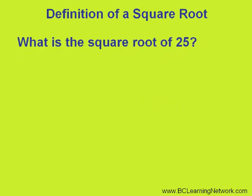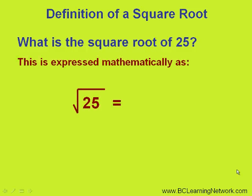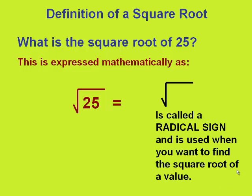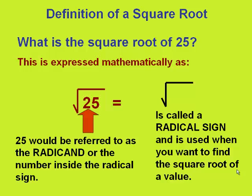What would the square root of 25 be? This is expressed mathematically as shown below. That symbol in front of the 25 is called a radical sign and is used when you want to find the square root of a number. The 25 would then be referred to as the radicand, or the number inside the radical.